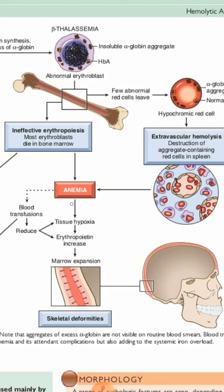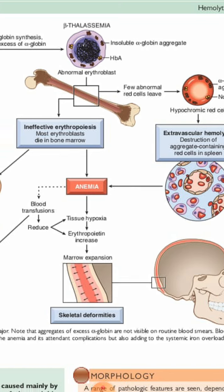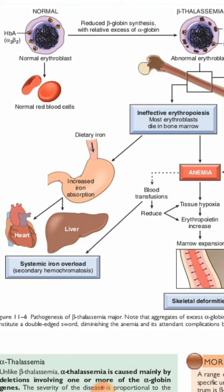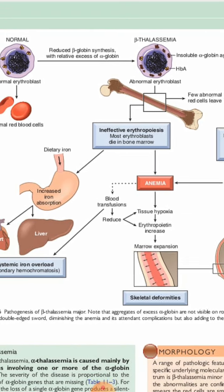Anemia reduces blood supply to tissues, causing tissue hypoxia. The kidneys respond by producing erythropoietin, which causes bone marrow expansion through excessive formation of pro-erythroblasts and erythroblasts. This bone marrow expansion is visible on X-ray and gives the patient a chipmunk-like face with skeletal abnormalities. Additionally, defective erythropoiesis leads to excessive iron absorption from the gastrointestinal tract, causing hemosiderosis and hemochromatosis with damage to the heart, liver, and other tissues.